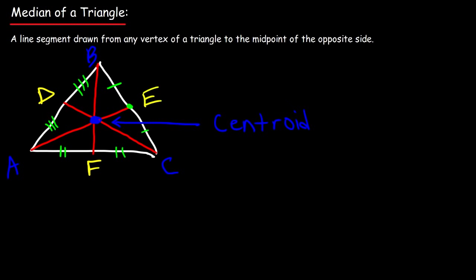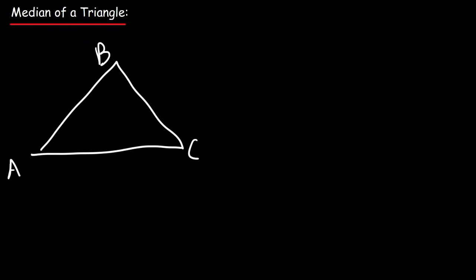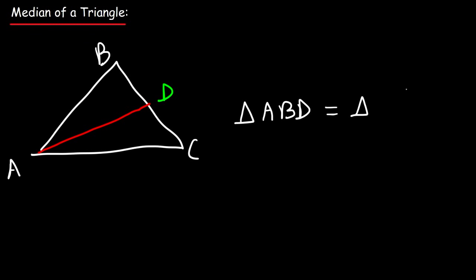Another property you need to know is that each median divides the triangle into two smaller triangles with the same area. For example, in triangle ABC, drawing the median from A to BC at point D means triangle ABD has the same area as triangle ACD — the top and bottom portions are equal in area.